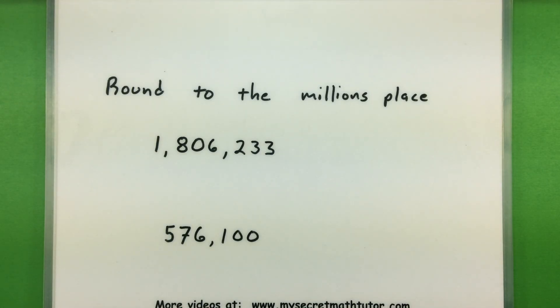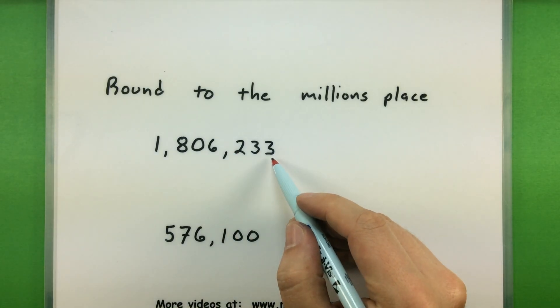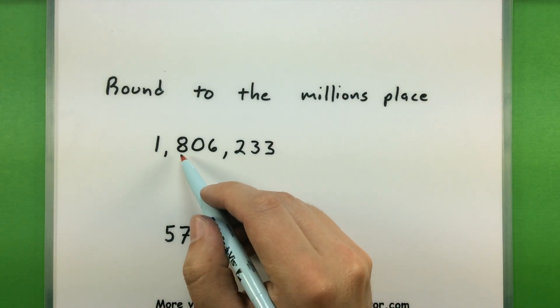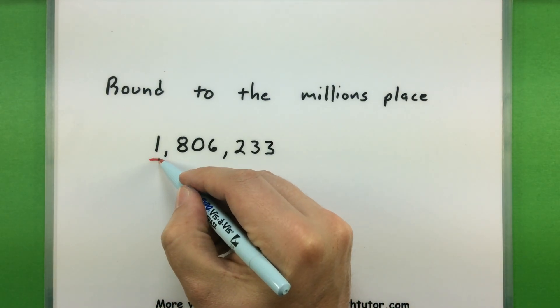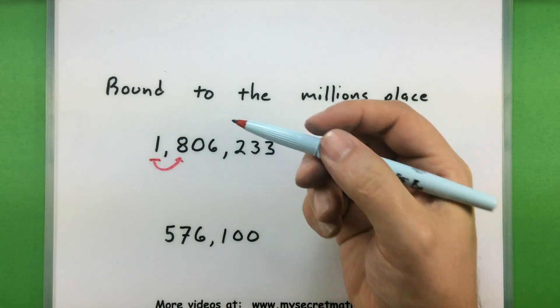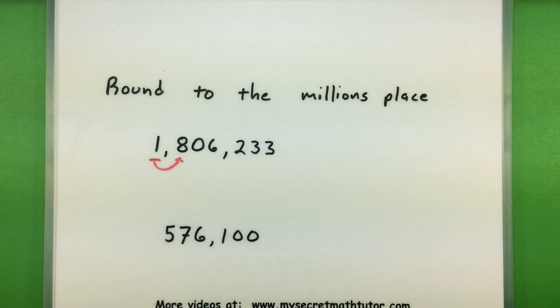In these next two, we are wanting to round to the millions place. So ones, tens, hundreds, thousands, ten thousands, hundred thousands, millions place. Now we'll check right before it to see what we need to do. Looks like the 8 is going to tell us to round up.